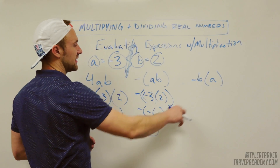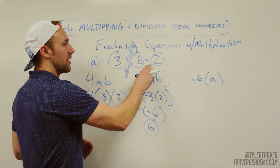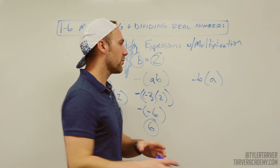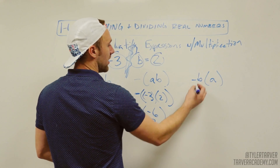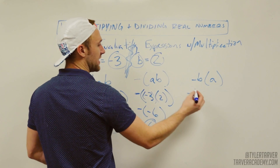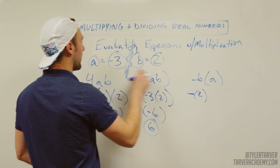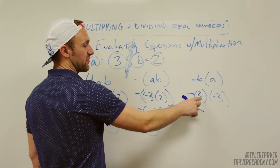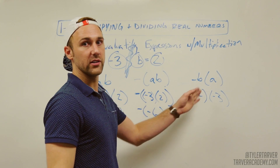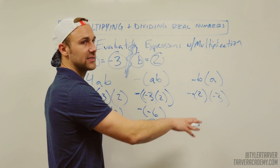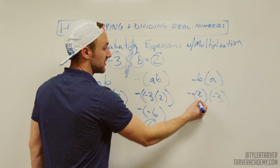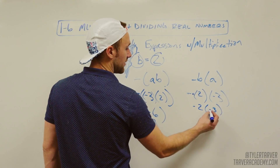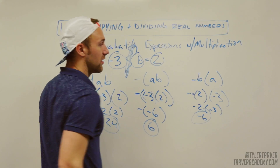Next we've got negative B parentheses A. B is positive 2, but put it exactly where it is — bring down the sign. Then put that in parentheses, B is 2. And already in parentheses is negative 3. The negative times 2 is the same as negative 1 times 2 — it's not minusing 2, it becomes a negative. So it's negative 2 times negative 3, and that's positive 6. You've got your answer.